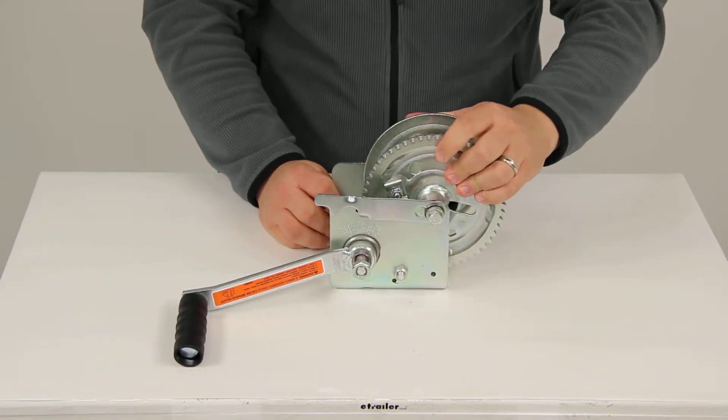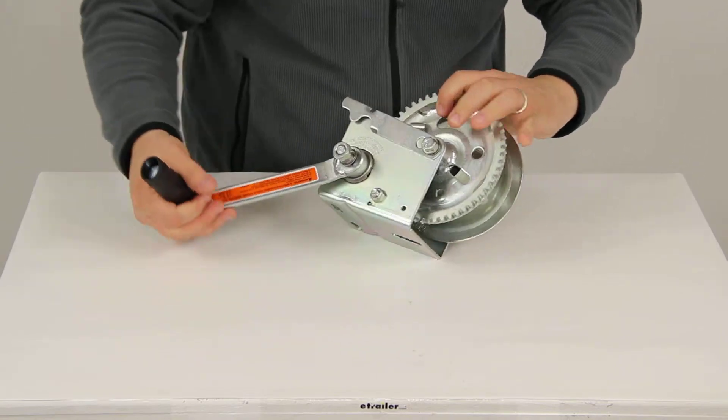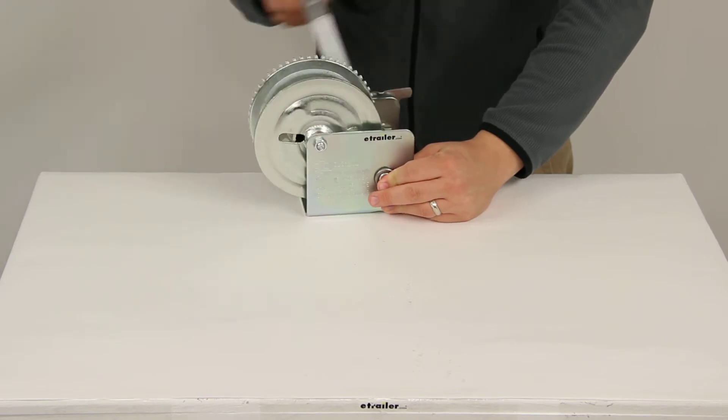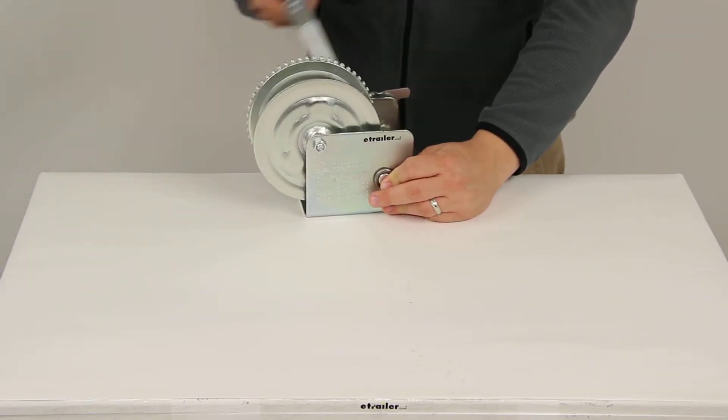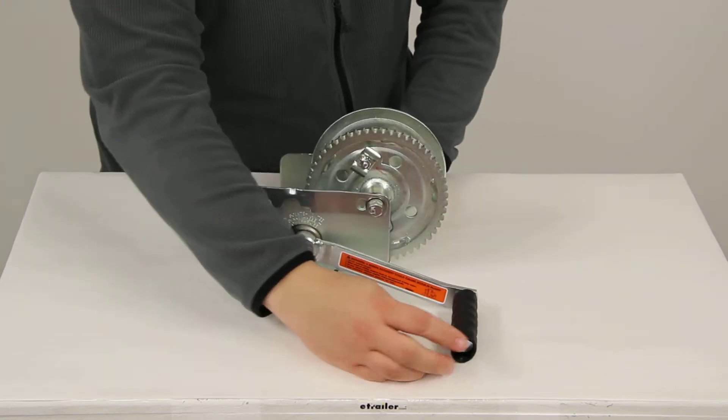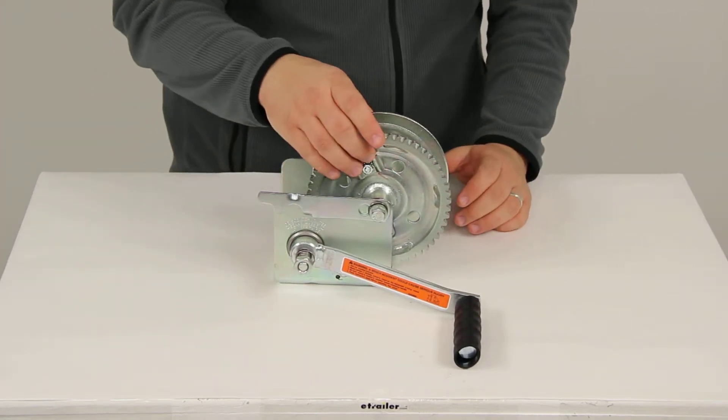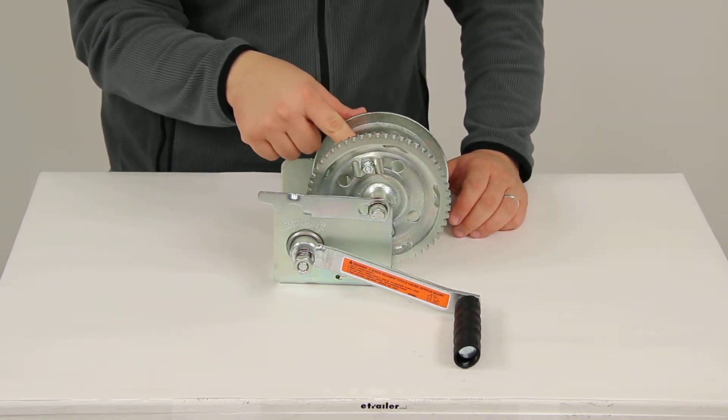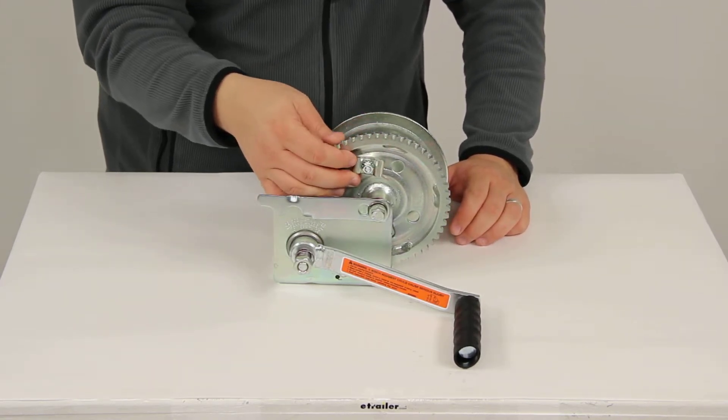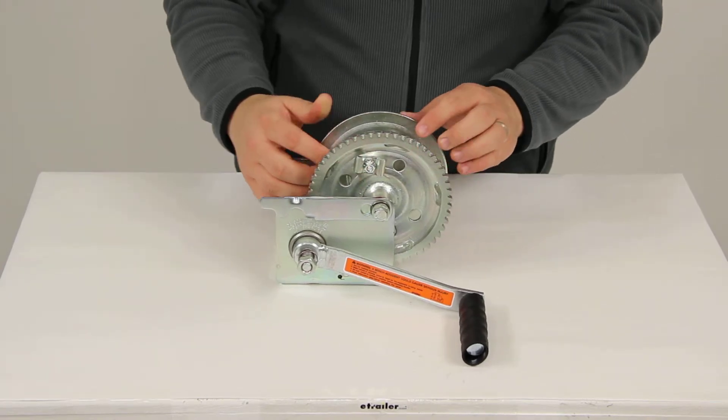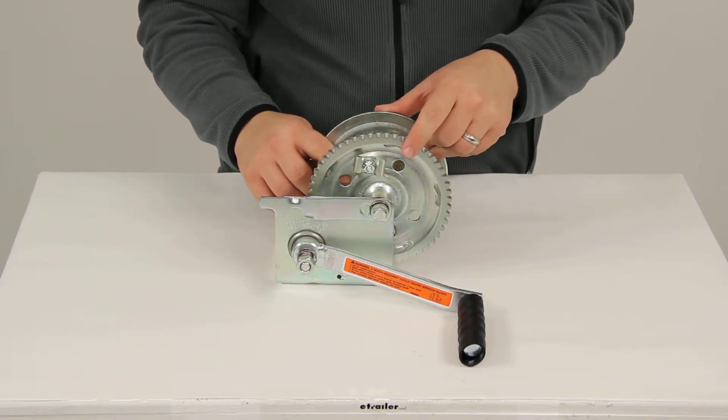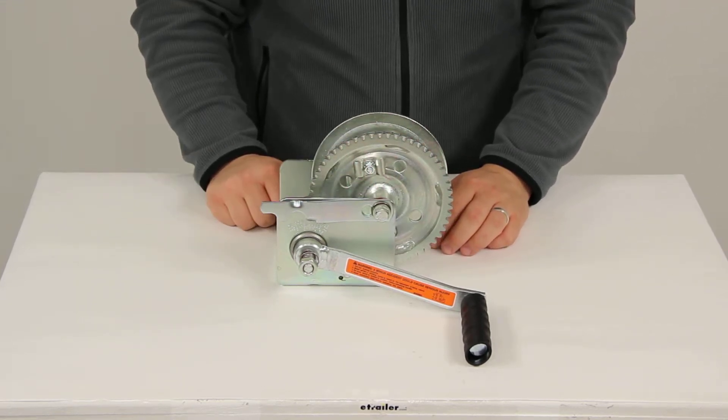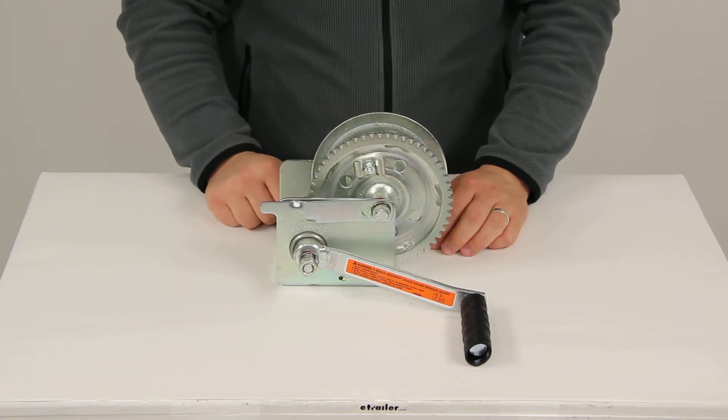Now a couple other options that I wanted to show you that this winch provides. Up here I already installed this, it's called a cable stop or a cable hold. It's just a carriage bolt that goes through the hole and you put the hold on there and you secure it with the nut. What that allows you to do is you can actually bring your cable out through one of these holes, feed it through and then you can wrap it around there and tighten that down to hold your cable securely in place. That way it's always convenient and easy to access.